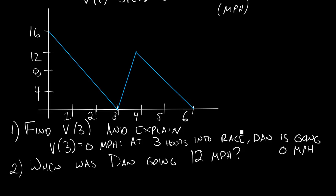If we look at the graph of our function, let's look at 12. We see that it looks like 1 hour into the race, I was going 12 miles per hour. But let's not stop there — let's look at what happens later in the race. I was slowing down for a while, then I stopped, but then I started speeding up again. And it looks like at about 4 hours into the race, Dan was going 12 miles per hour again. Both are right answers.